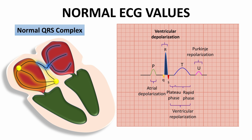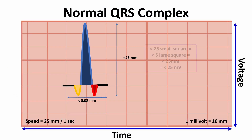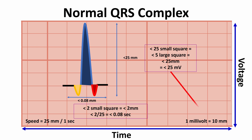The duration of the QRS complex is the total time taken for both ventricles to be depolarized. Since the right and left ventricles are depolarized in a synchronous fashion, the normal QRS complex is narrow, has a sharp peak, and measures less than 25 mV — or less than 25 mm, or 25 small squares, or 5 large squares on the vertical axis — and less than 0.08 second, or 2 mm, or 2 small squares on the horizontal axis.